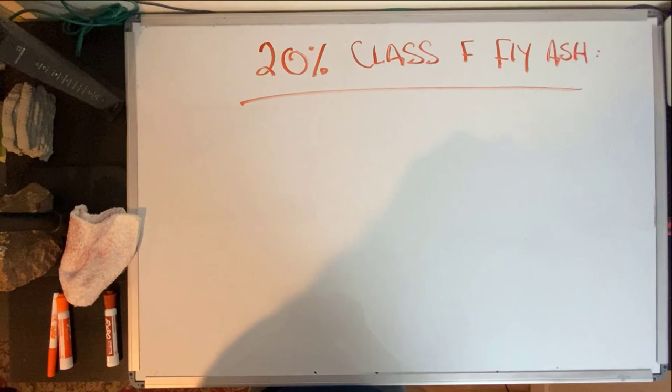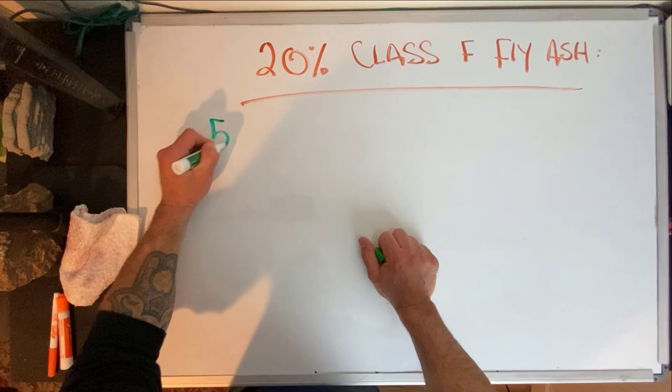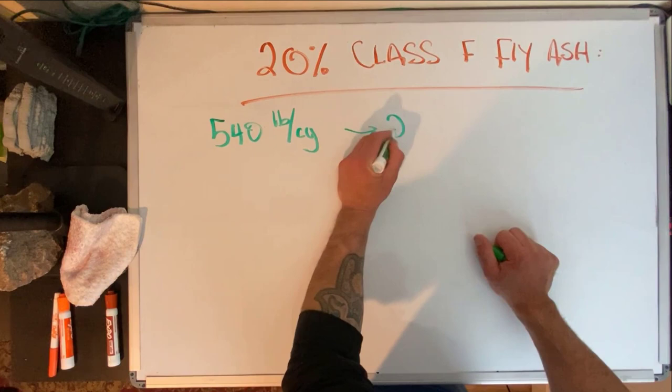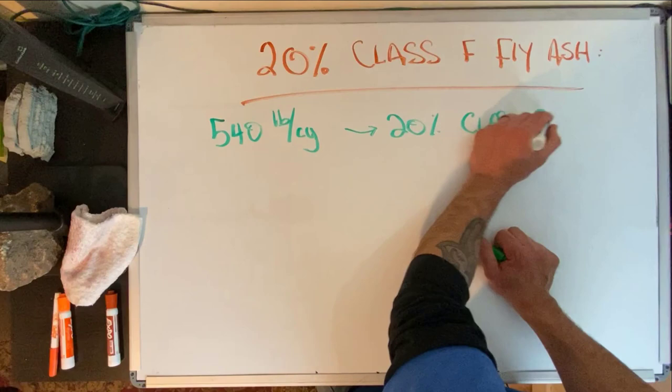20% class F fly ash, what does that mean exactly? First and foremost, we're going to assume a total cementitious of 540 pounds per cubic yard. Now if we do 20% class F fly ash, that means we've got to